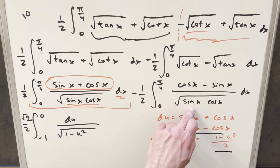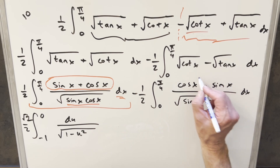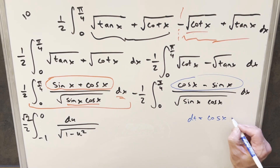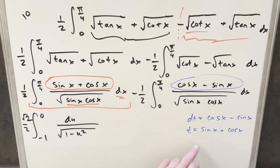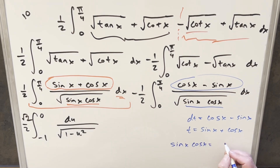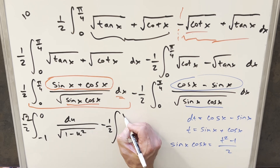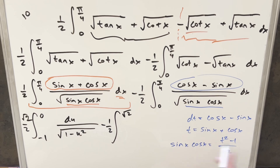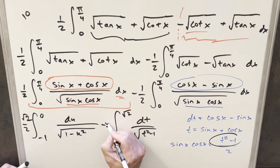Now doing the exact same trick for the second integral with a different variable t. We set dt = (cos x − sin x) dx, so integrating gives t = sin x + cos x. Squaring and solving for sin x cos x gives sin x cos x = (t² − 1)/2. The bounds: t(π/4) = 1/√2 + 1/√2 = 2/√2 = √2, and t(0) = 0 + 1 = 1. The second integral becomes −(√2/2) · ∫₁^{√2} dt/√(t² − 1).